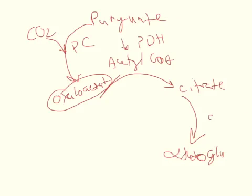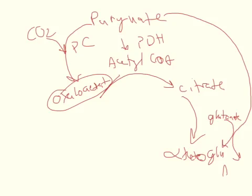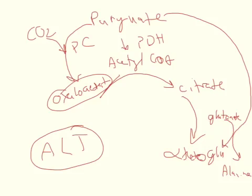So let me try one more time. This is glutamate, and it's going to produce alpha-ketoglutarate by reacting with pyruvate, which produces alanine. And I believe the enzyme involved in that is alpha-ketoglutarate transaminase or maybe alanine transaminase.